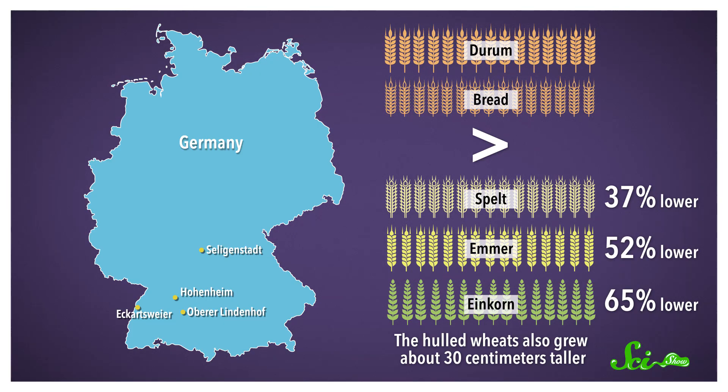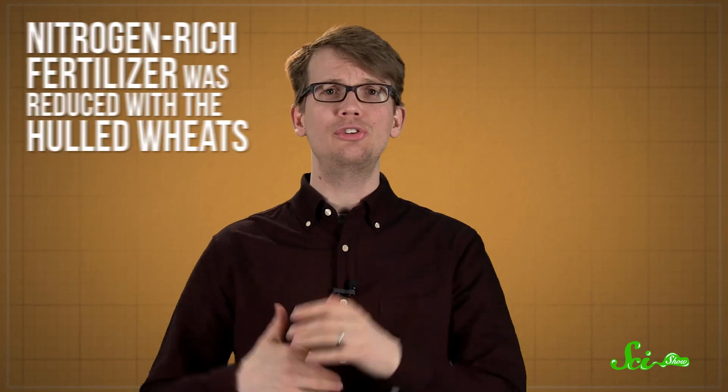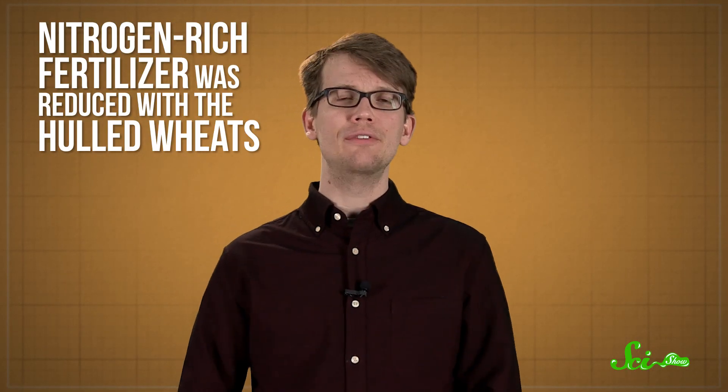The hulled wheats also grew about 30 centimeters taller, which is not good. Taller wheat doesn't mean more grain, because the grain only grows on the top. But taller wheat runs a much higher risk of breaking in a strong wind, and the bent stalks are much more difficult to harvest. And that higher growth was after reducing the amount of nitrogen-rich fertilizer given to the hulled wheats, nitrogen-rich fertilizer being what makes grass plants grow even taller.